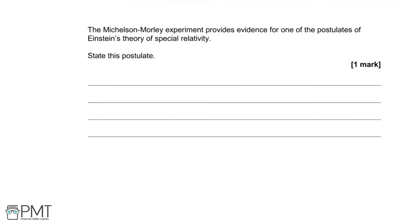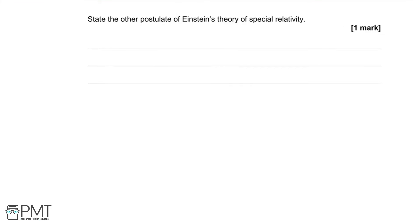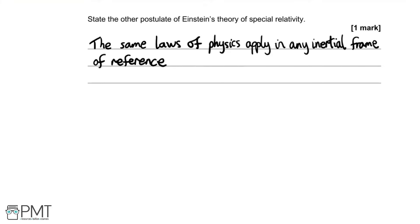The Michelson-Morley experiment provides evidence for one of the postulates of Einstein's theory of special relativity. That postulate is that the speed of light remains the same in free space — you must mention free space, or you can say vacuum instead. The other postulate of special relativity is that the laws of physics are the same in any inertial reference frame — they don't change from one inertial reference frame to another. One mark for each postulate.